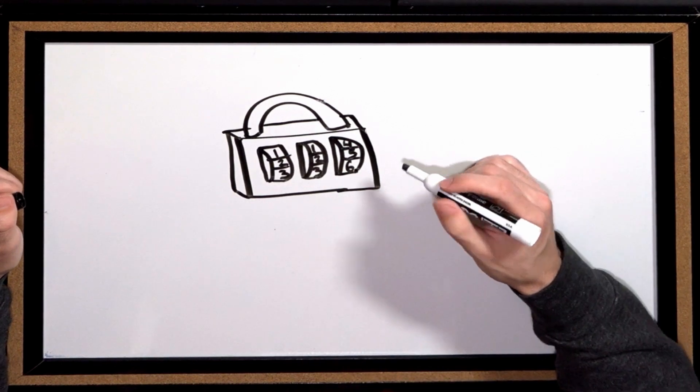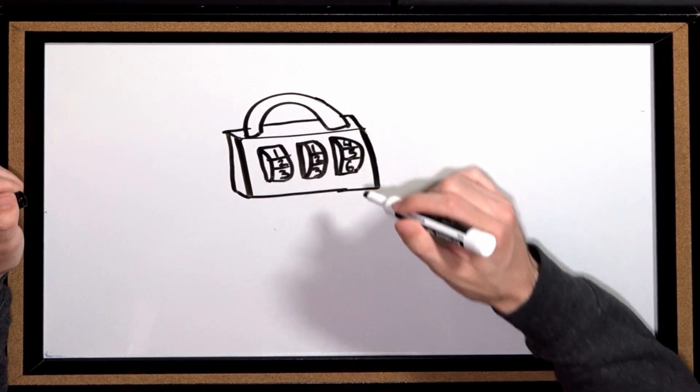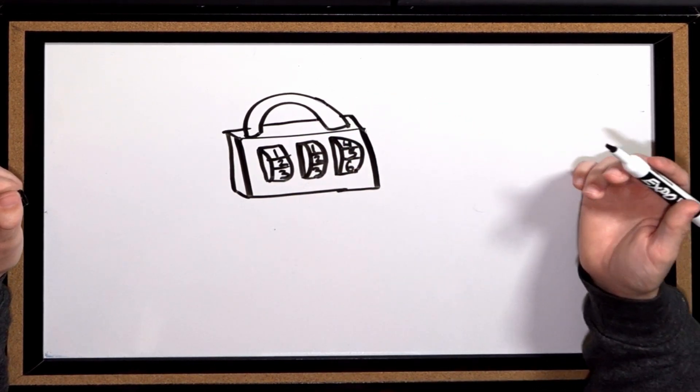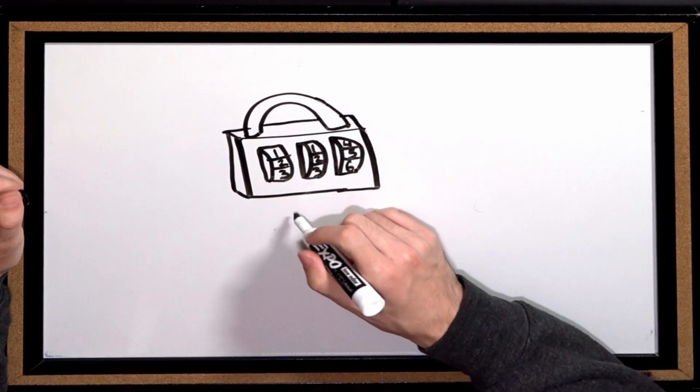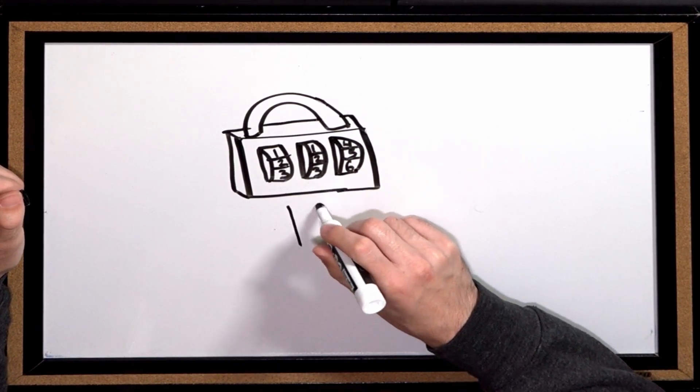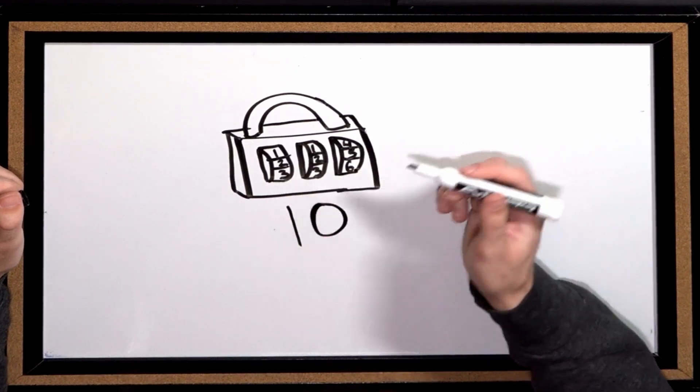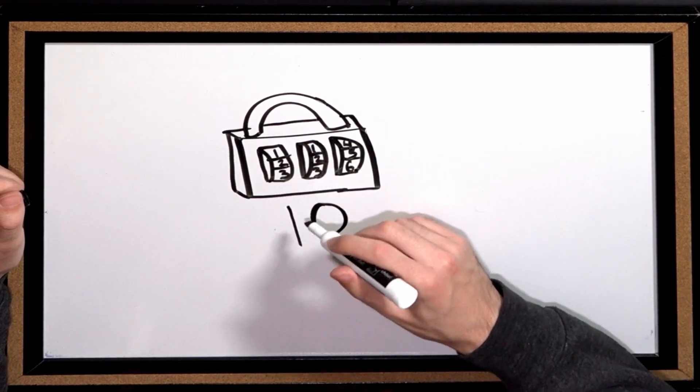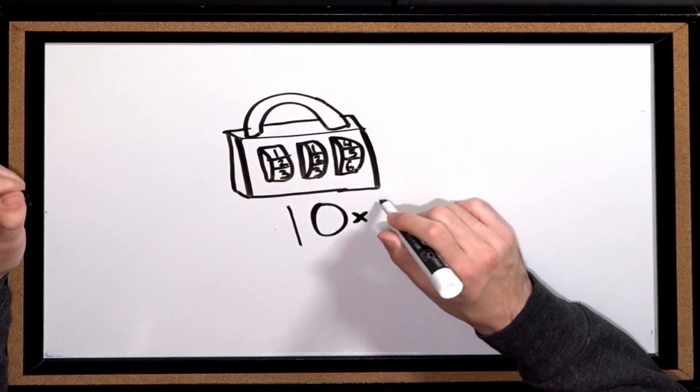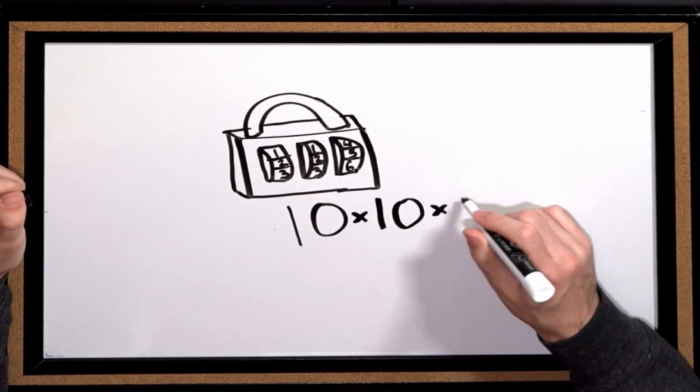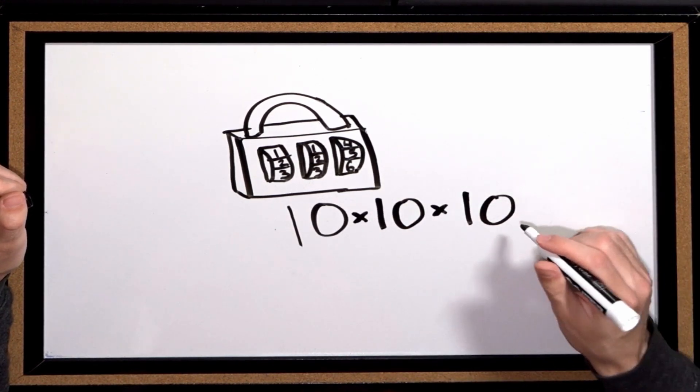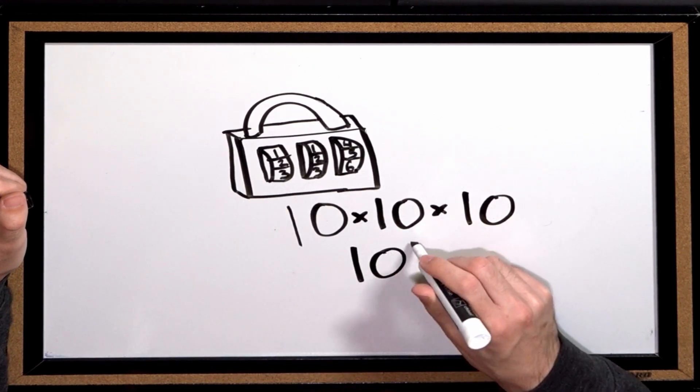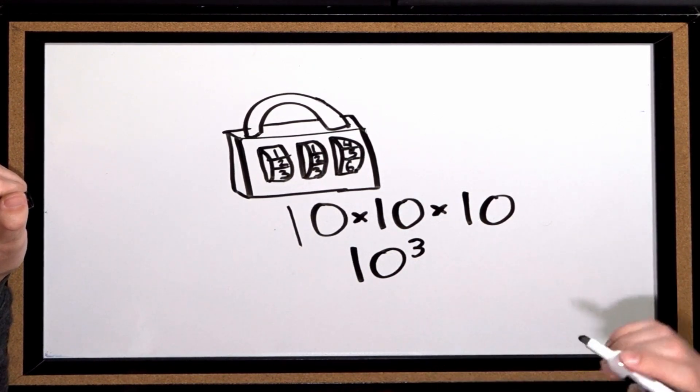So all together, we could find how many combinations using an exponent. Each spinner has ten different possibilities, and there are three different spinners: one, two, three. So there are ten times ten times ten different combinations of what that could be, or in other words, ten to the power of three, which is one thousand.